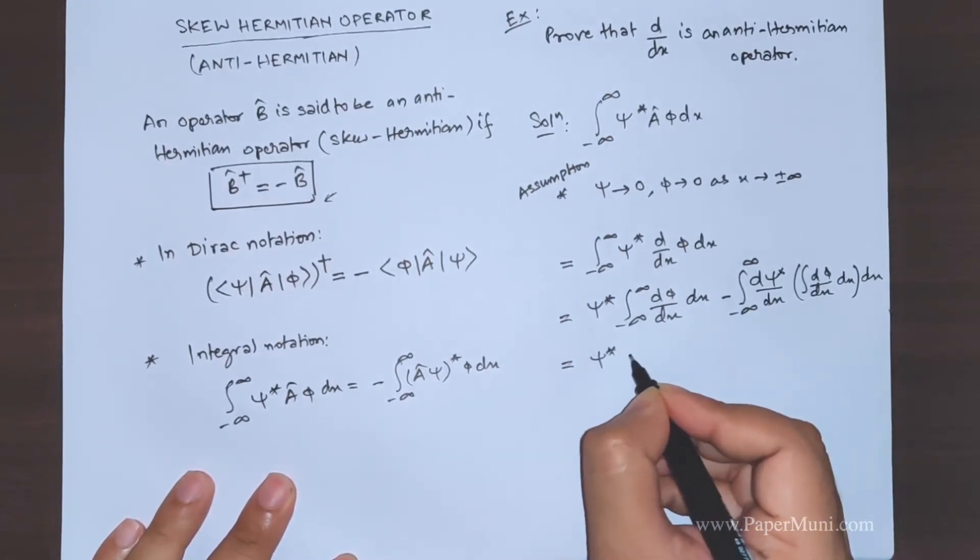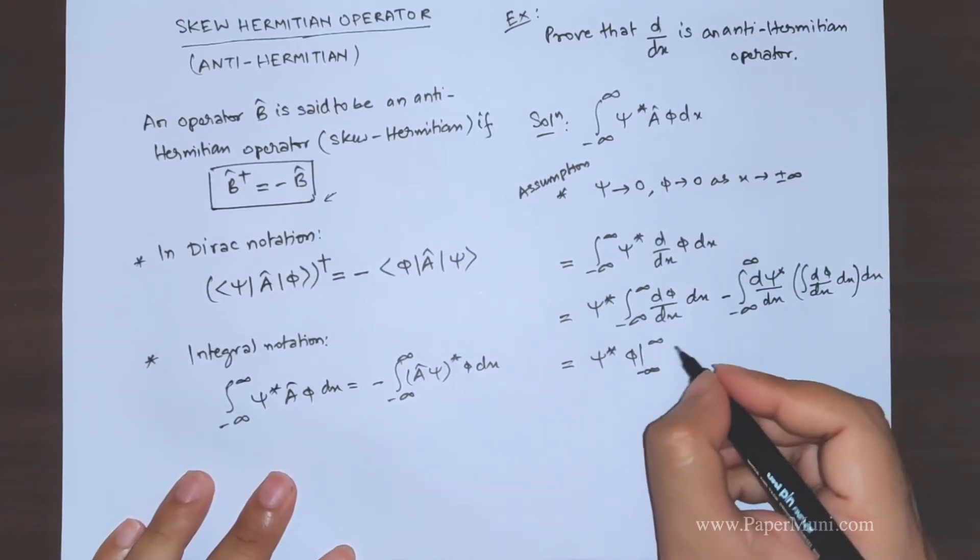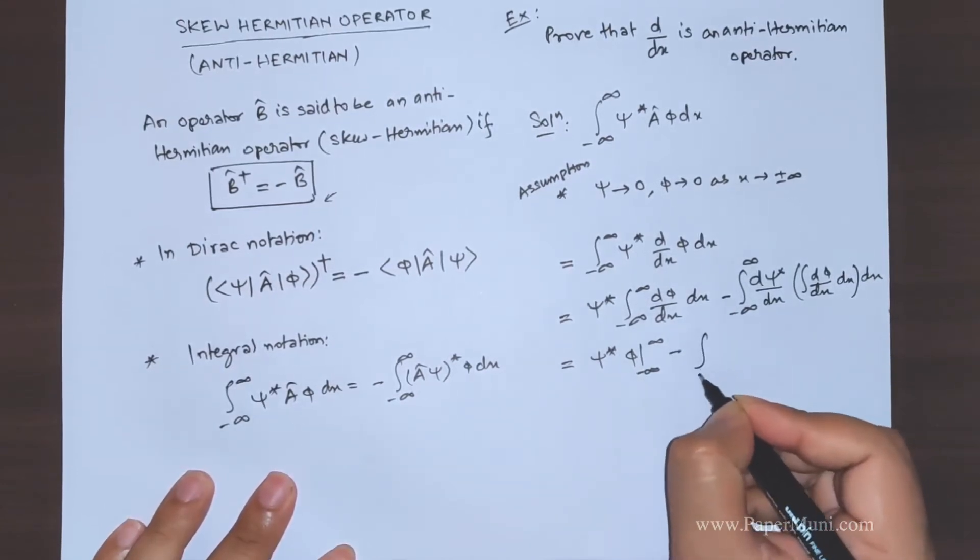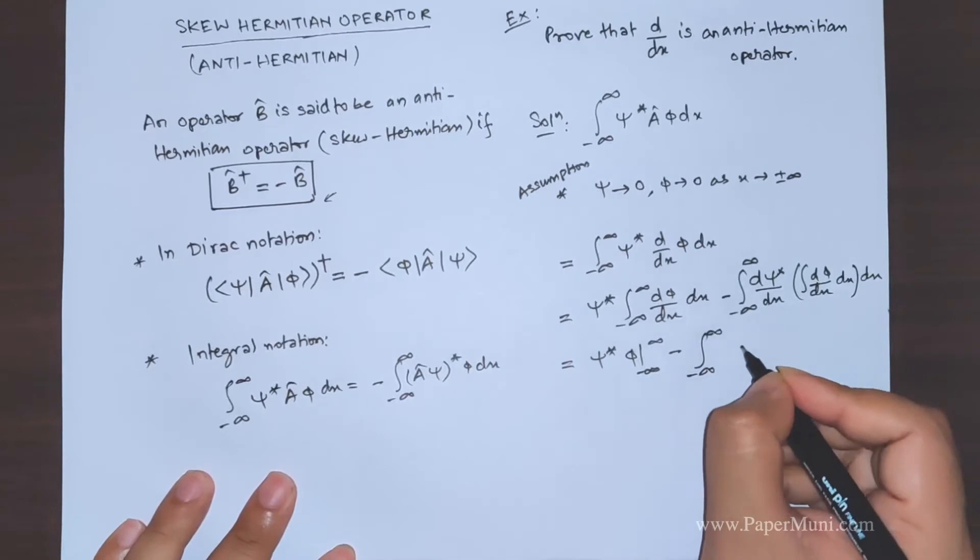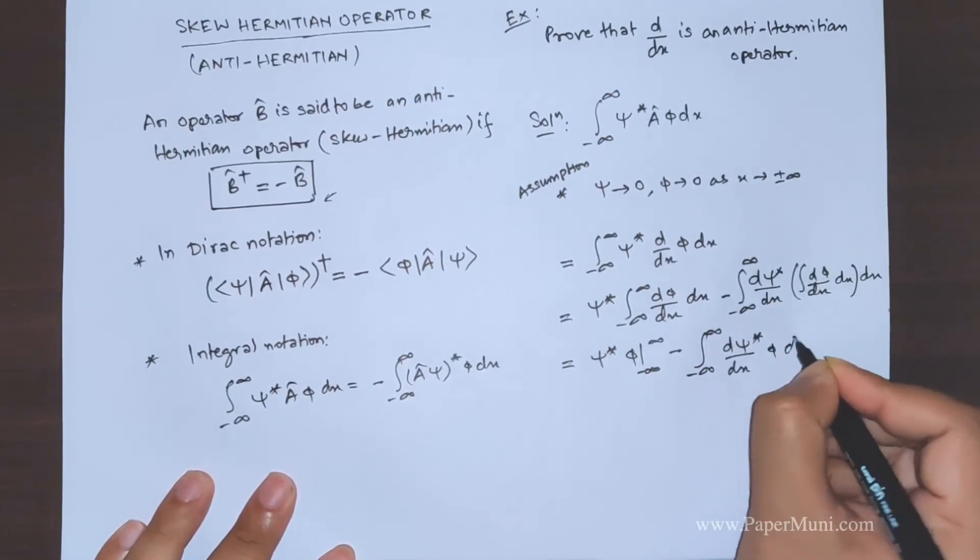Integrating further, we have here minus infinity to plus infinity, we get phi from this and this one is d psi star dx, this is phi again dx.